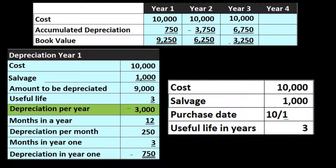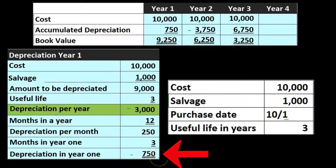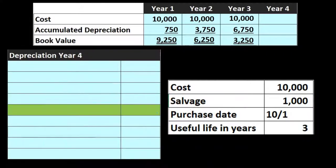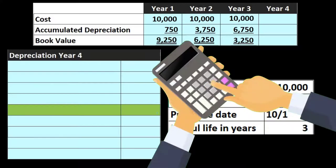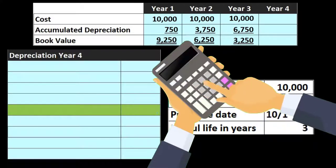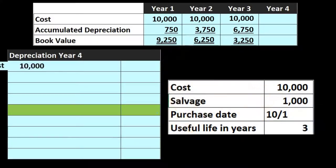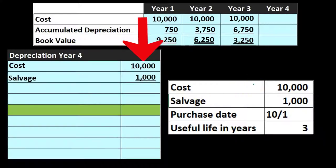Now in year 4, we have this partial year again. We have the same $10,000, but now we need to handle the partial year. If 750 was recorded in year 1, then the remaining portion of that $3,000 will have to be recorded in year 4. Let's go through the same calculation: the straight line calculation is the $10,000 cost, minus the salvage value.